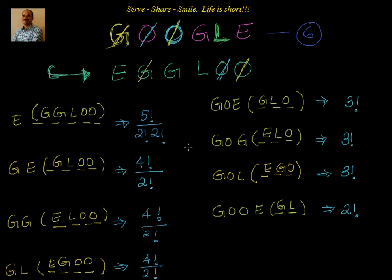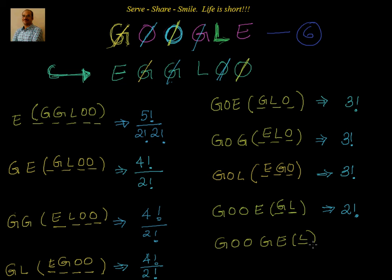Now once we are done with G, O, O, E, I will go to G, O, O, G. Once I go to G, O, O, G, I strike off G and come back to the starting point. So I have G, O, O, G, E with me. I write down G, O, O, G, E — there is only one slot to be filled, and that letter is L. So the word is G, O, O, G, E, L and there is only one way to do that.